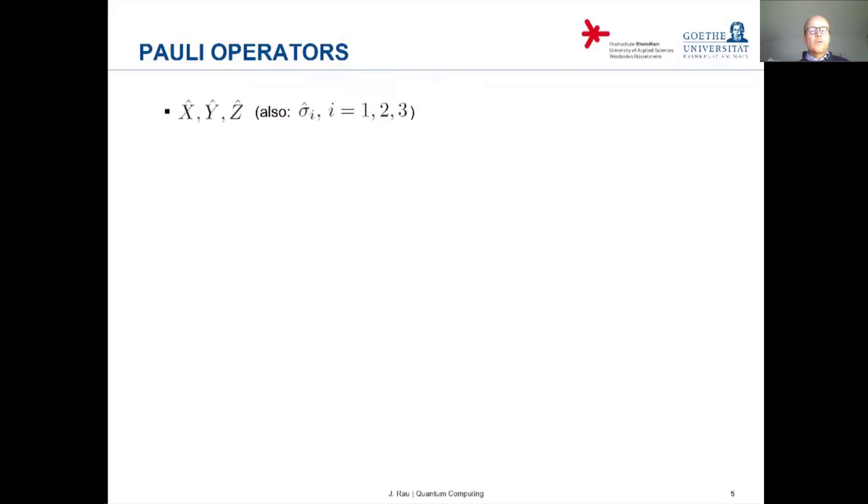In quantum computation or quantum information the Pauli observables are commonly denoted by X, Y, Z. Perhaps you know another notation, perhaps you know them as sigma 1, 2, 3 or sigma X, Y, Z. That's of course also a possible notation, but since they appear so often one doesn't want to use subscripts and one usually uses simply the letters X, Y, Z for the Pauli operators.